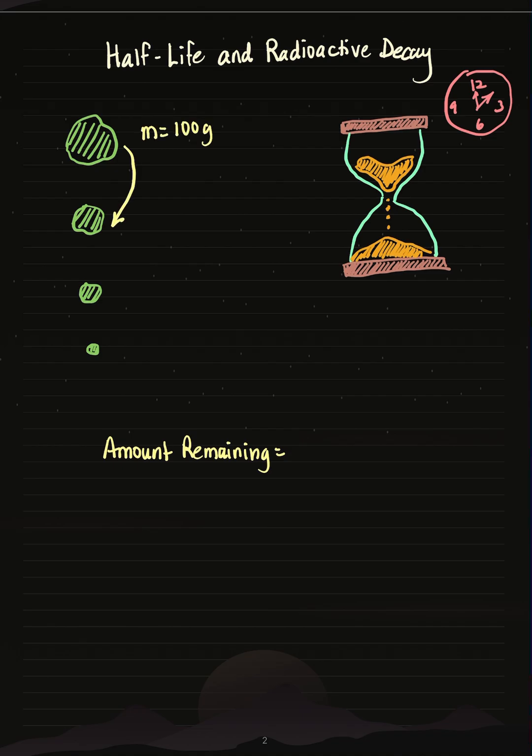For example, if I started with 100 grams of a substance, I would want to see how long it takes for it to become 50 grams, so this represents a half-life.